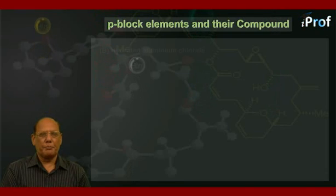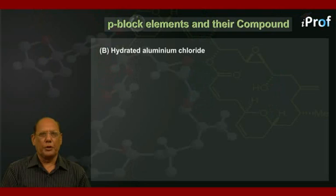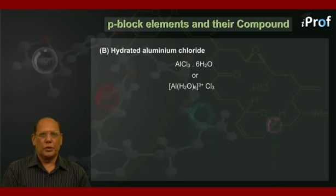Next compound is hydrated aluminum chloride, which we may write as AlCl3·6H2O or [Al(H2O)6]³⁺ Cl3. Preparation: